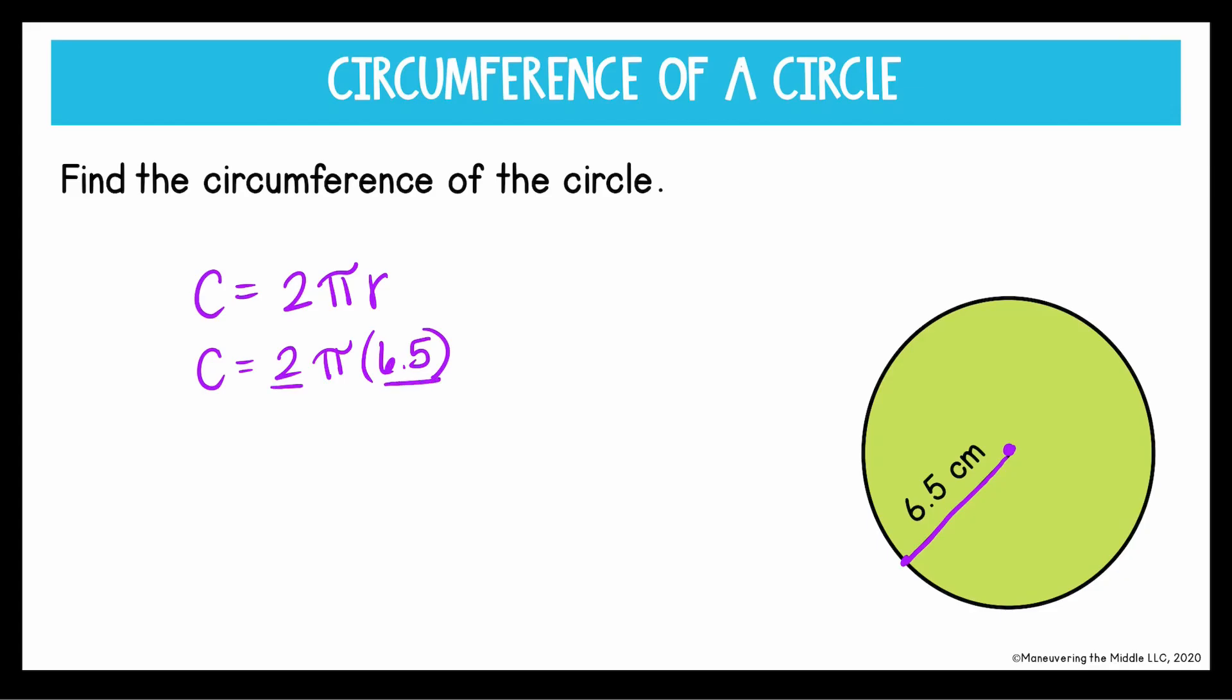And first I'm going to multiply these two values, 2 times 6.5, which gives me 13. Again, this is where you would stop if they wanted the solution in terms of pi. For today we will multiply, and for pi we're going to use 3.14. And multiply that gives me here a circumference of 40.82 centimeters.